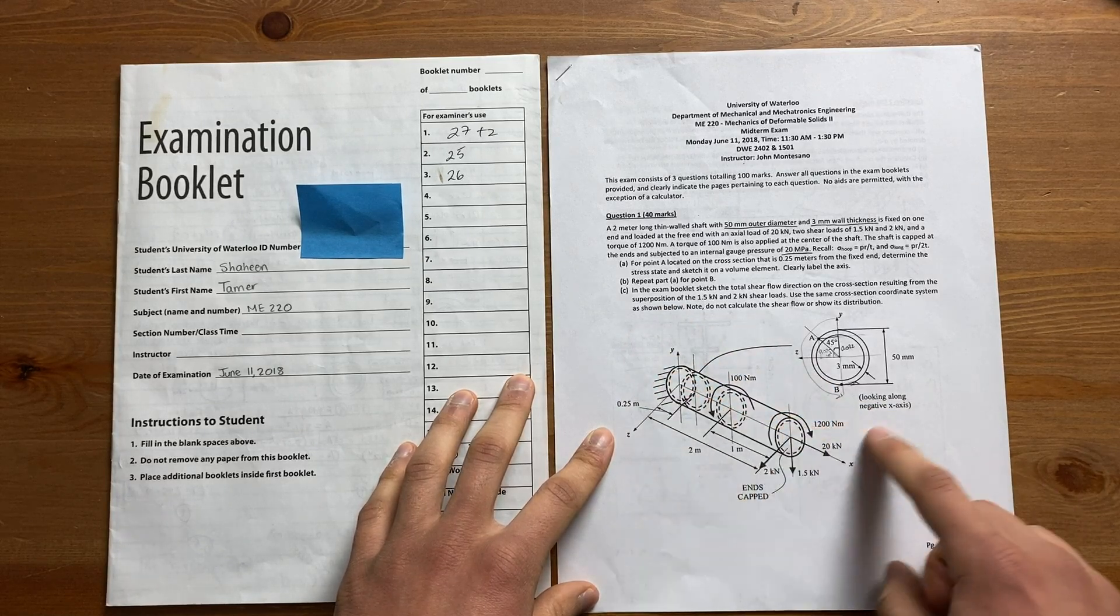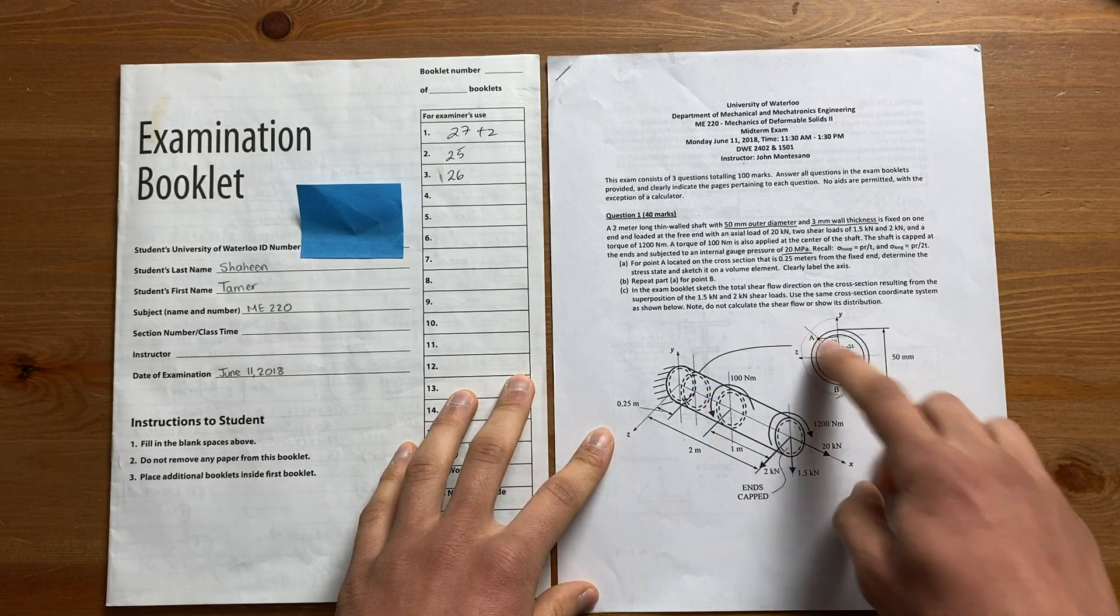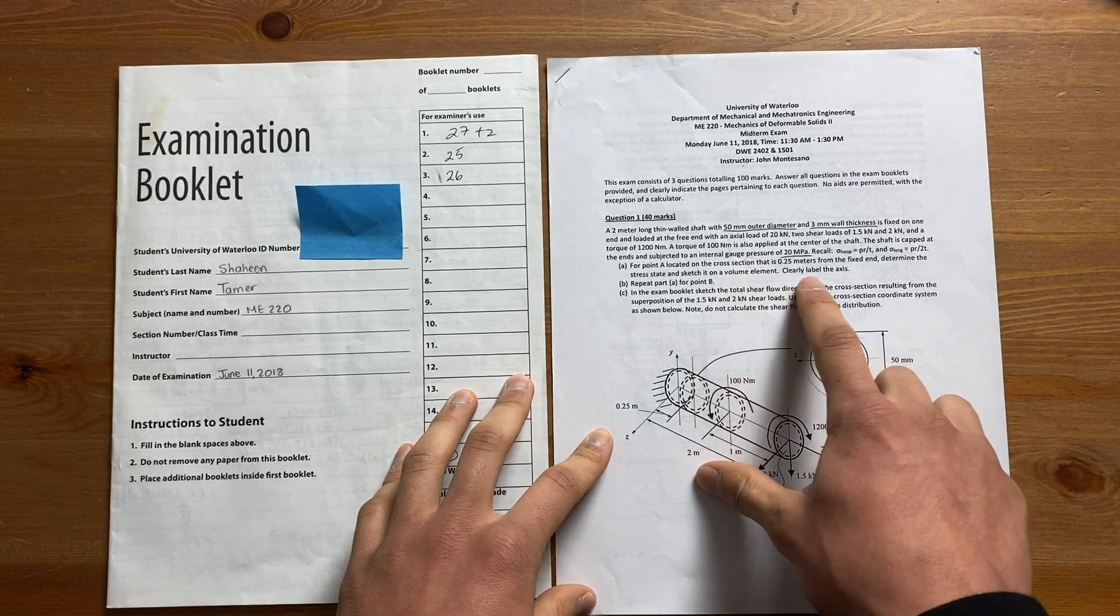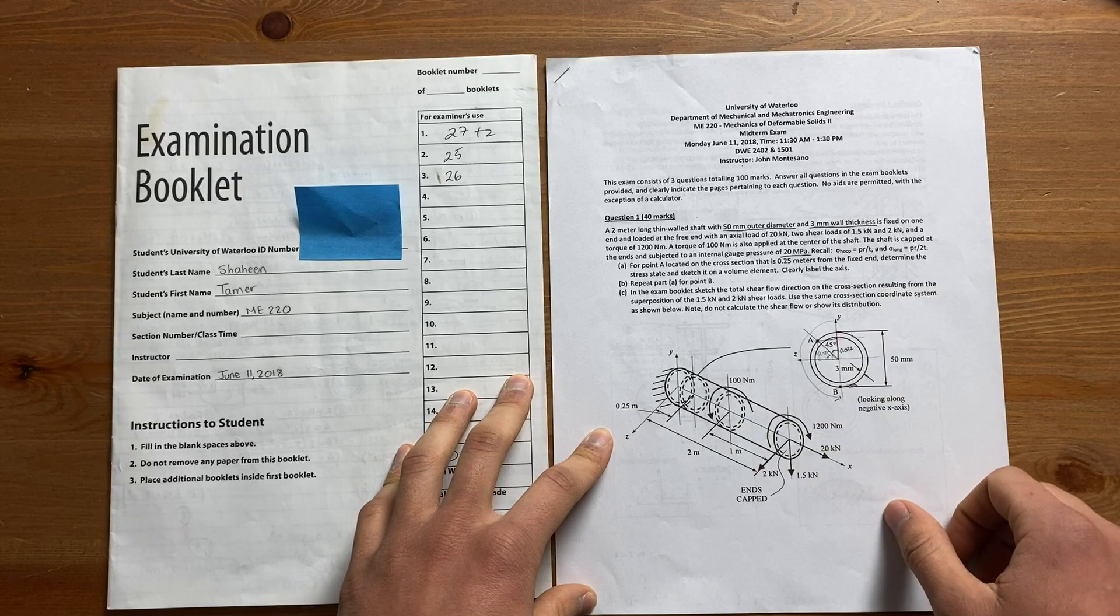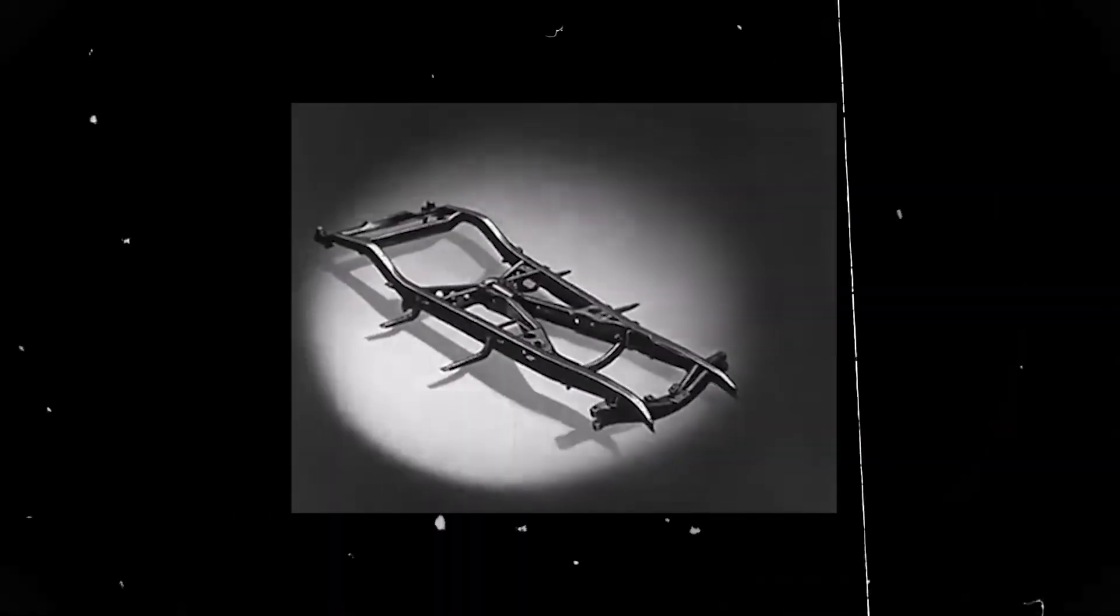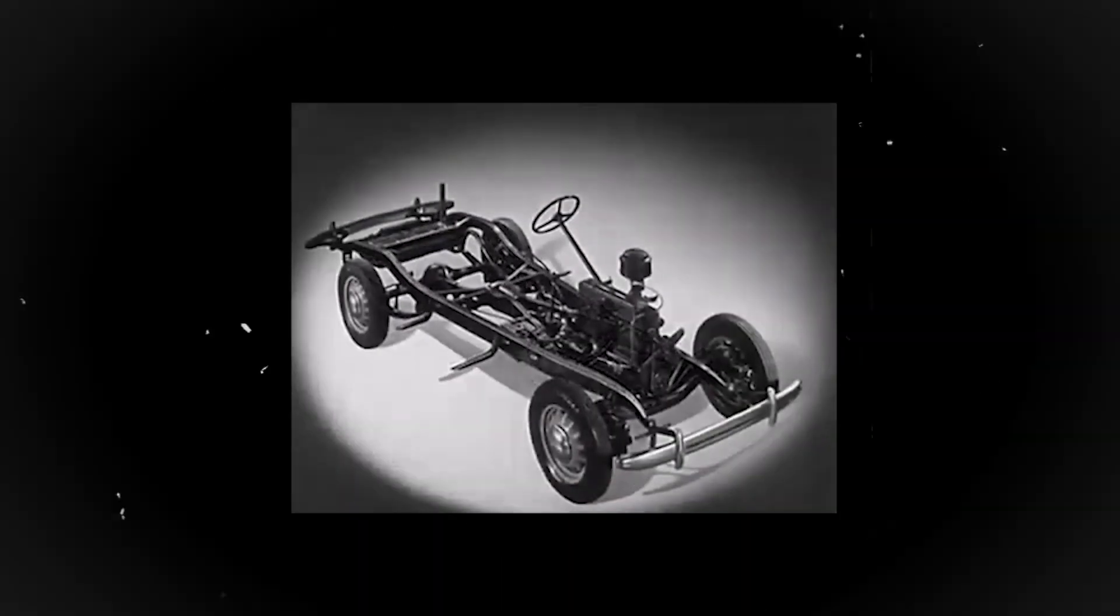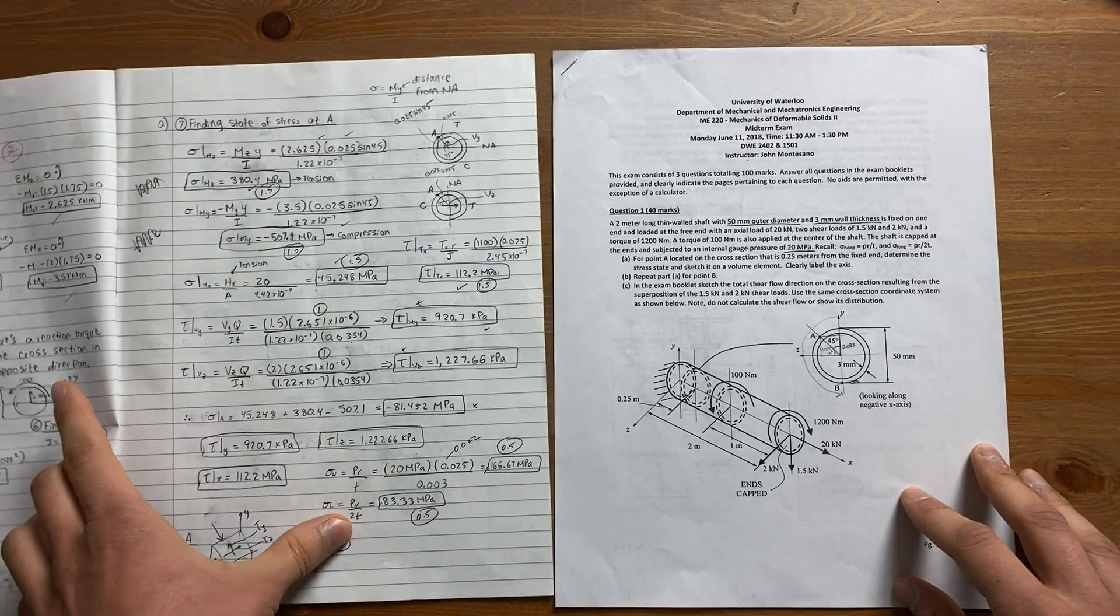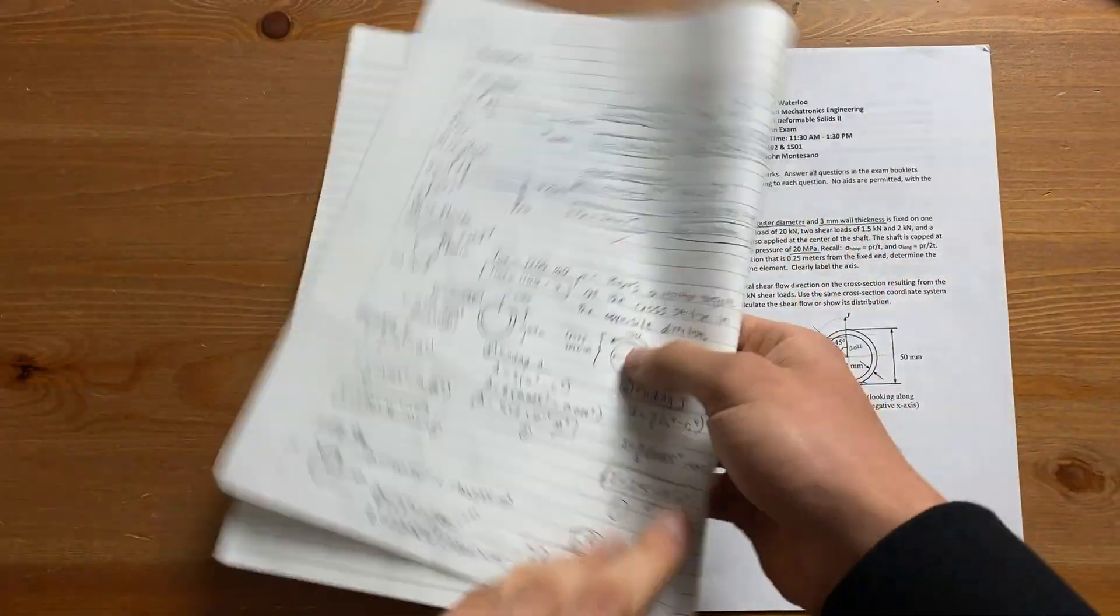The first question says that you basically have a shaft that's attached to the wall and there are a bunch of forces and torques acting on it in all directions. The question asks to find how much stress is acting at certain points on the shaft. This is actually a pretty practical question in engineering because let's say you have a shaft that makes up the chassis of a car which holds the car together and provides it with structural stability - you will have to use concepts from this question to make sure that the shafts in the chassis can withstand the loads and prevent it from failing.